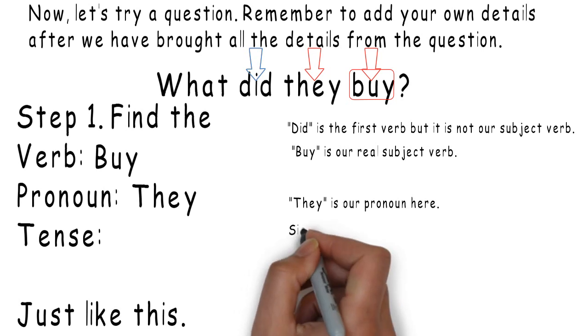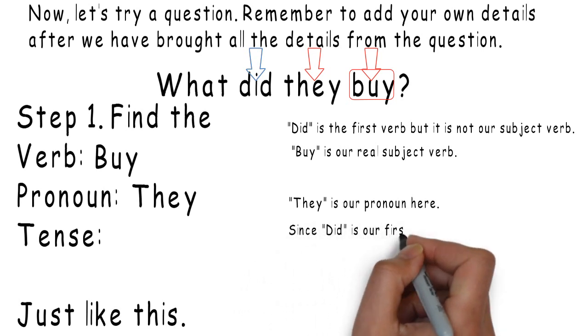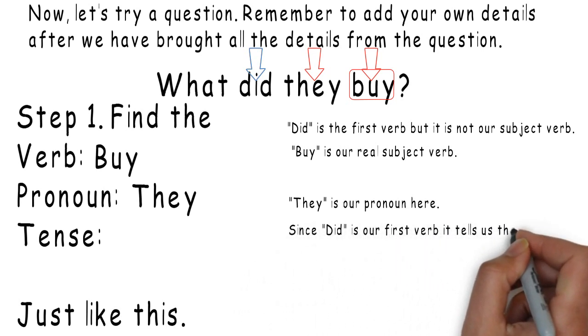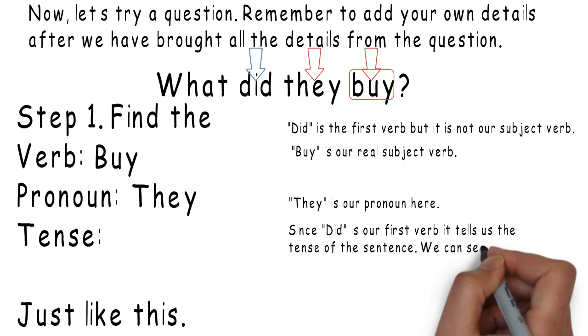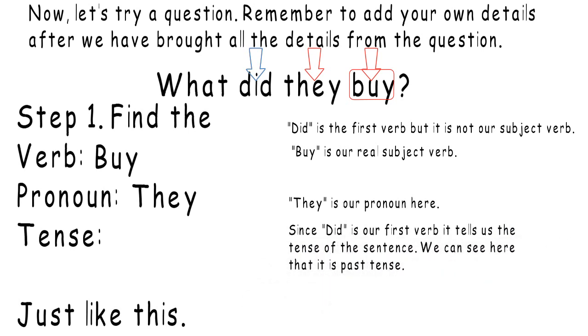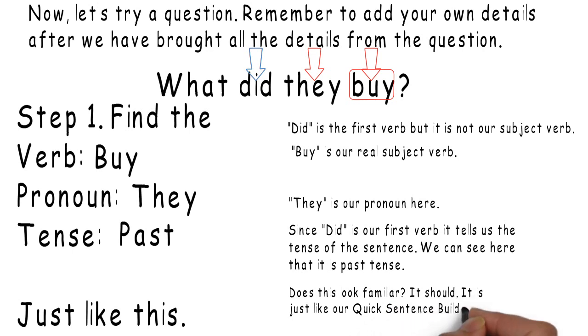Did. Since did is our first verb, it tells us the tense of the sentence. We can see here that it is past tense. So, our tense is past. Does this look familiar? It should. It is just like our Quick Sentence Builder lessons.